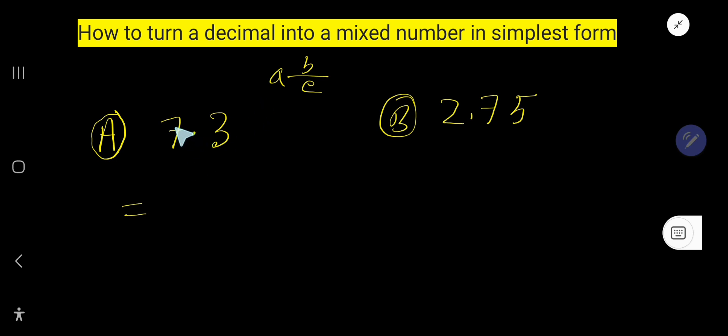So to convert this decimal number to mixed number, before the decimal, the number is considered the whole number. So here the whole number is 7, and after the decimal, this is the part we need to convert to a fraction.